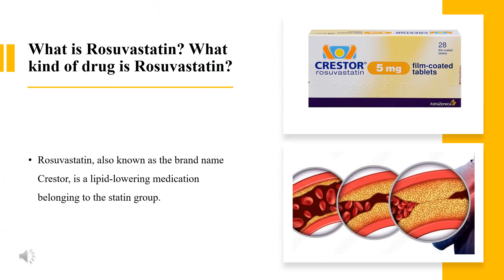What is rosuvastatin? What kind of drug is rosuvastatin? Rosuvastatin, also known by the brand name Crestor, is a lipid-lowering medication belonging to the statin group. It is an HMG-CoA reductase inhibitor, which is used together with diet to reduce the risk of cardiovascular events, including myocardial infarction and stroke.